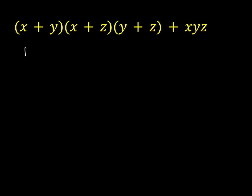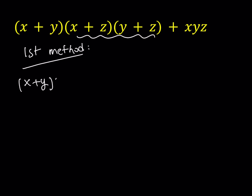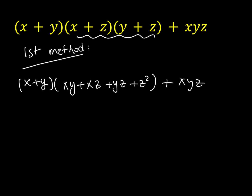First method. We're going to go ahead and distribute these terms and see what we get. I'd like to keep the first one as is for now and then just multiply these together. So X plus Y multiplied by XY plus XZ plus YZ plus Z squared, and then I'm just going to add XYZ. And then if I go ahead and distribute this, I should be getting something like X squared Y plus X squared Z plus XYZ. And then multiplying X by Z squared gives me XZ squared.